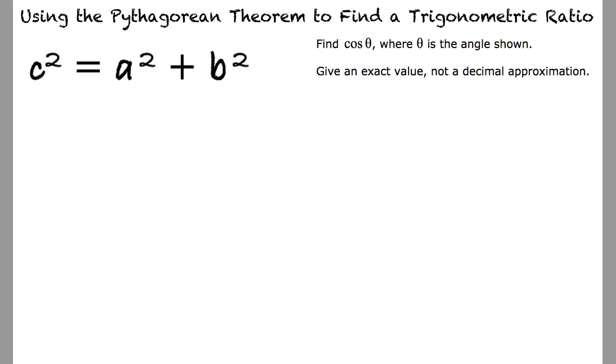Find cosine of theta, where theta is the angle shown. Give an exact value and not a decimal approximation. In this example, we are given the values for the hypotenuse and the opposite side, so we need to solve for the adjacent side, right?